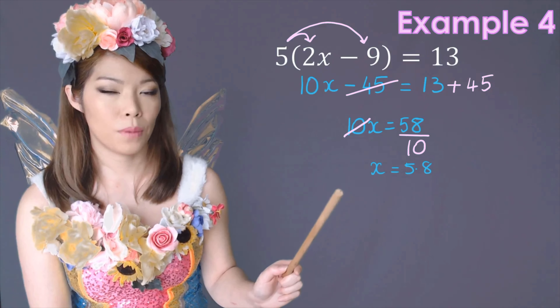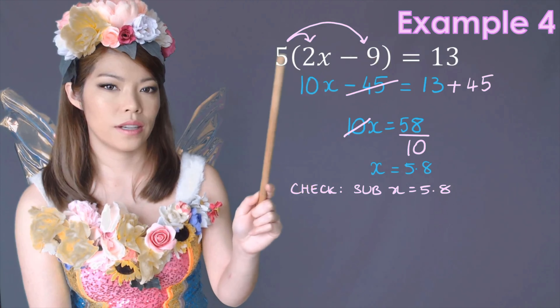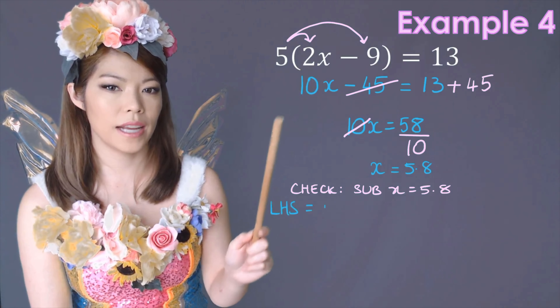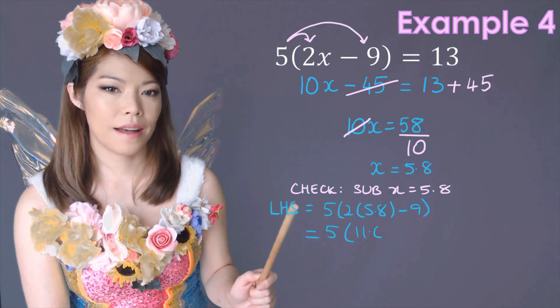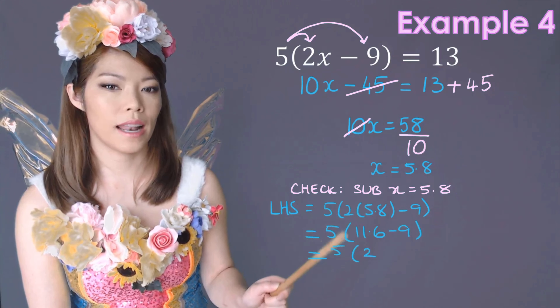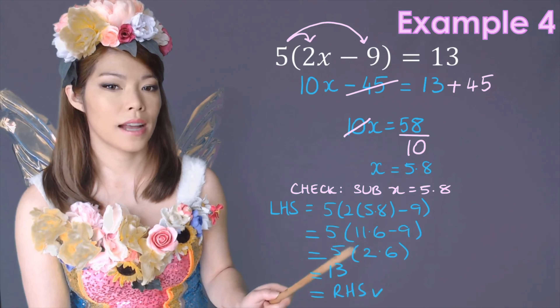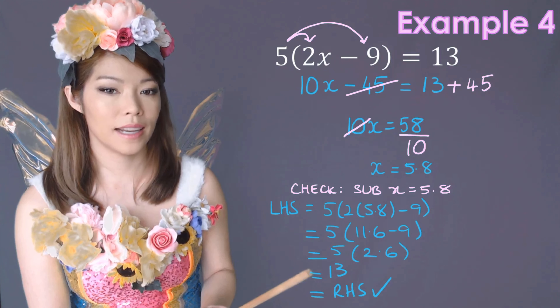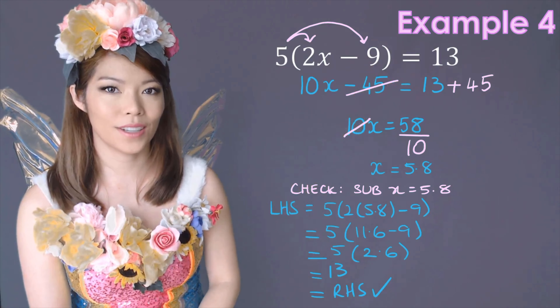Again, we check. The left-hand side is that expression. Put x as 5.8. So we have 5.8 times 2, which is 11.6. 11.6 minus 9 is 2.6. And 2.6 times 5 is 13, which is equal to the right-hand side. So we're correct.